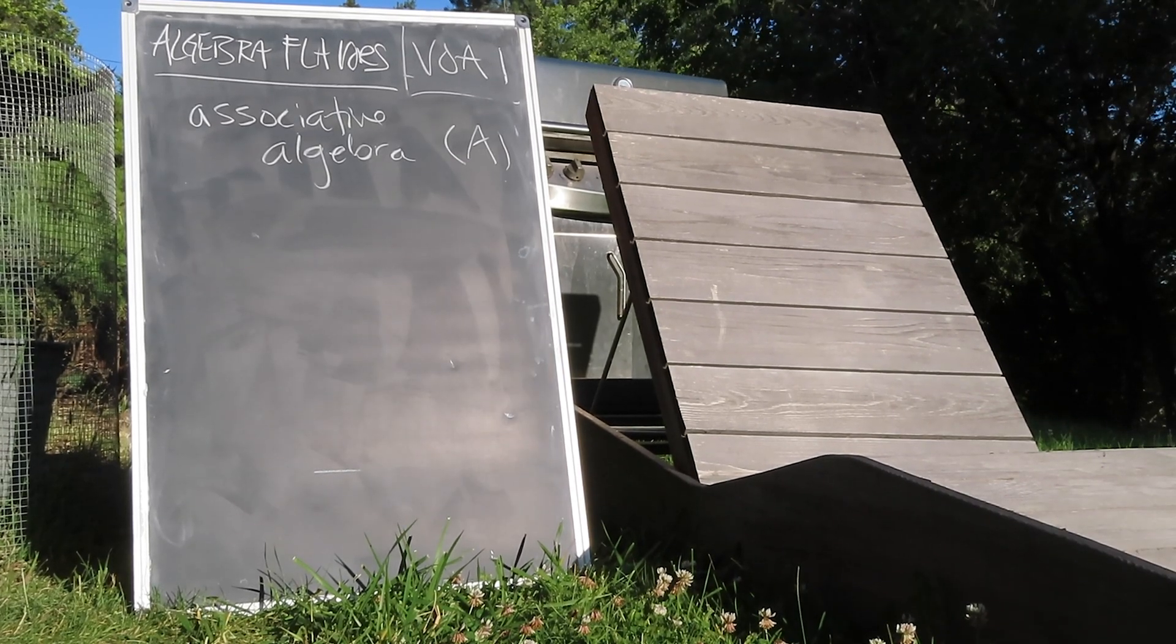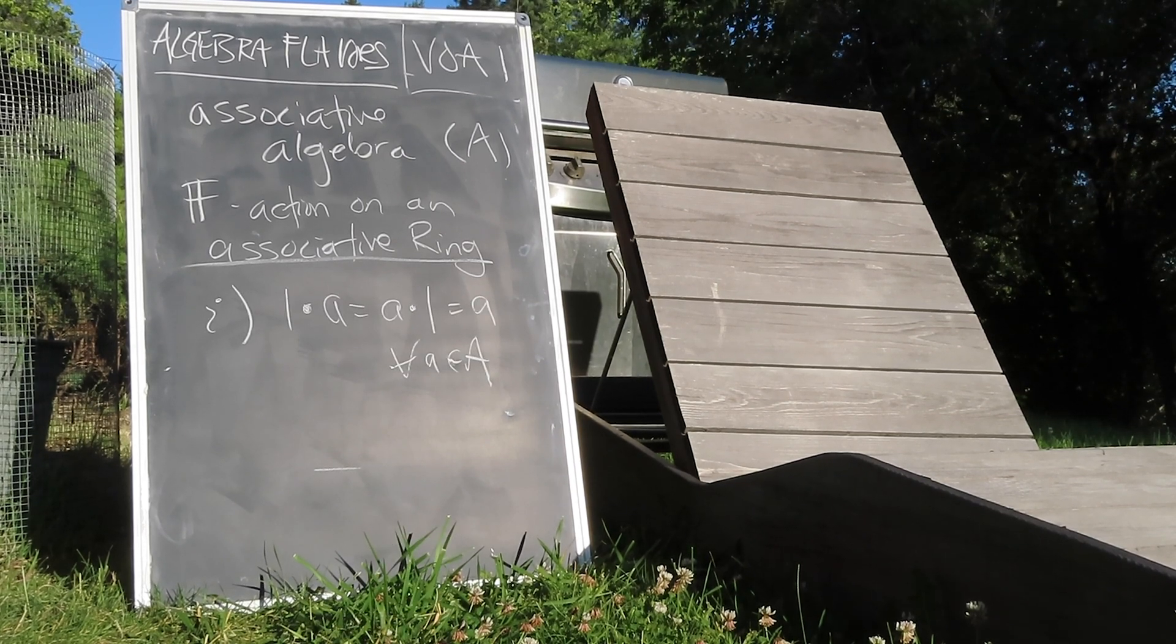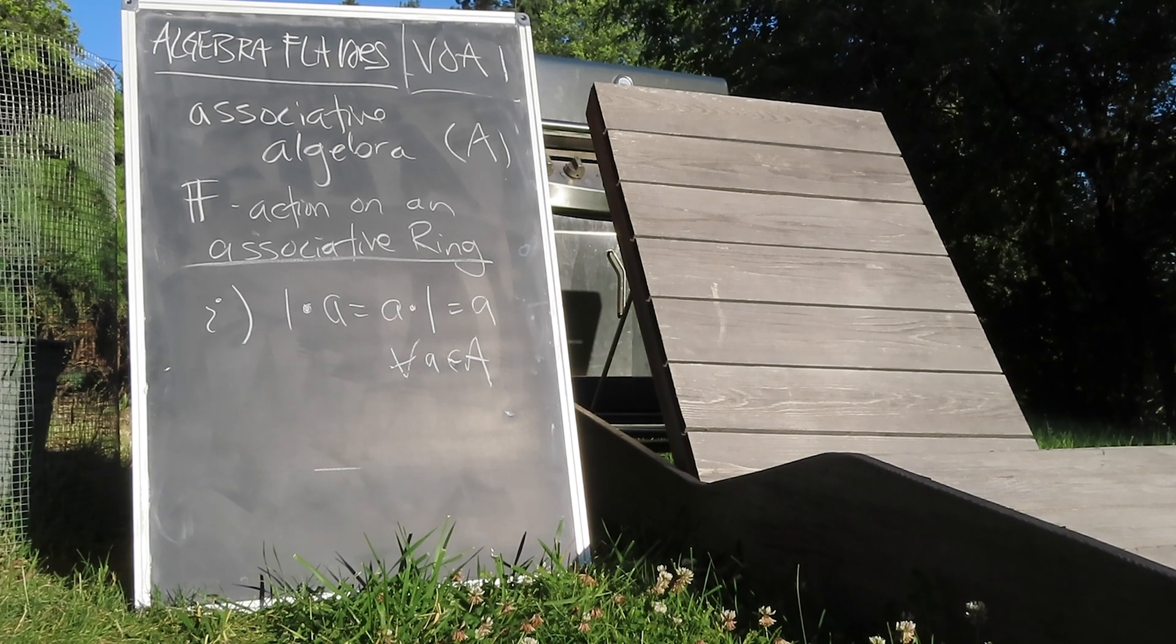Similarly, an associative algebra is a field action over an associative ring, which means two things. First, there must be a two-sided unit element in the algebra with respect to vector multiplication.